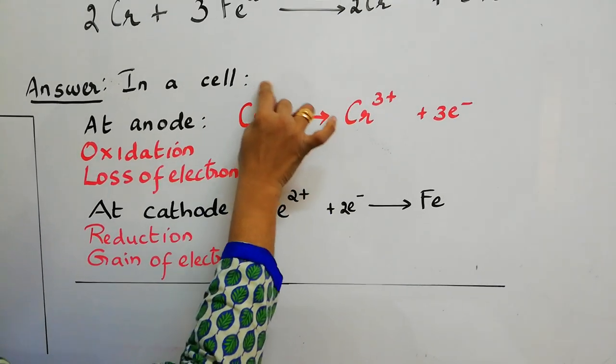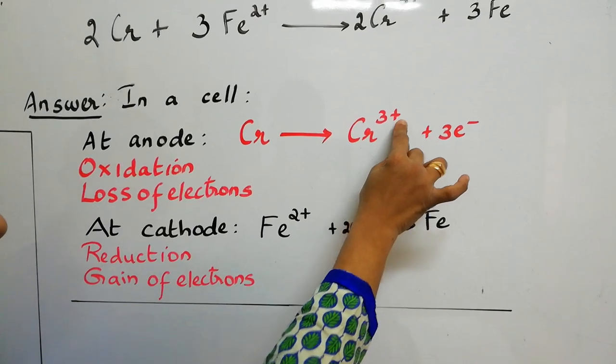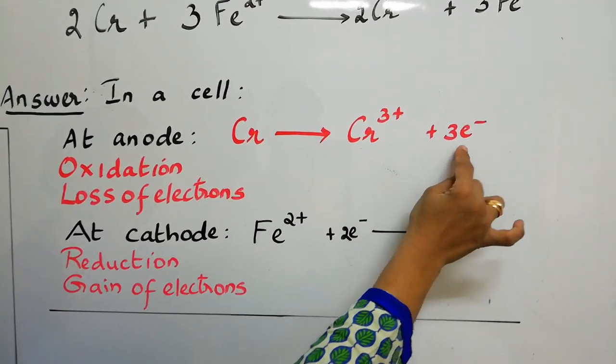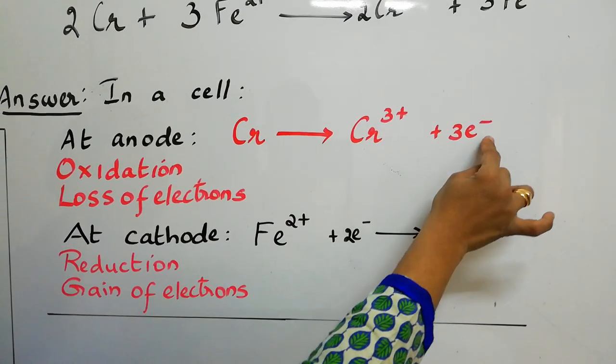Chromium is now with a charge 0 here, whereas here chromium is 3 plus, which indicates there is a loss of 3 electrons. So, Cr gives Cr3 plus plus 3 electrons.